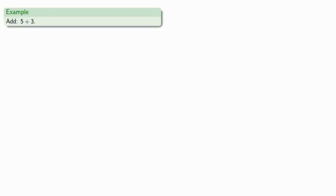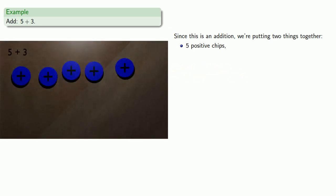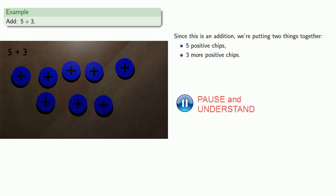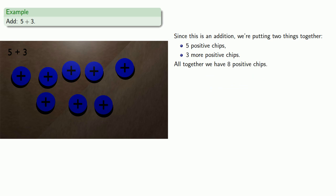Let's add five plus three. Since this is an addition, we're putting two things together. Five — that's five positive chips. And three — that's three more positive chips. All together we have eight positive chips, and so we can write our sum: five plus three equals eight.